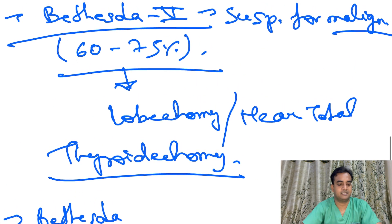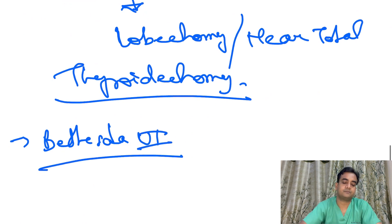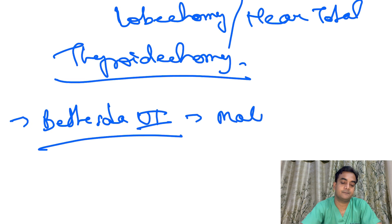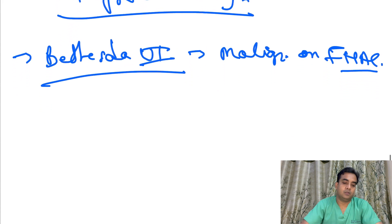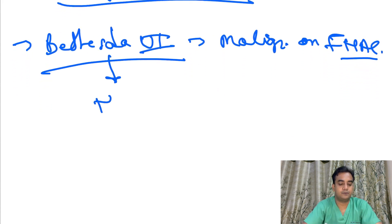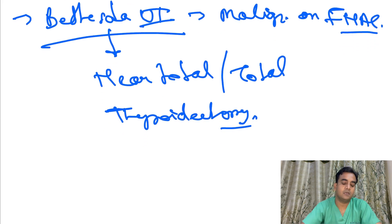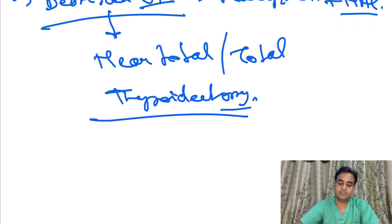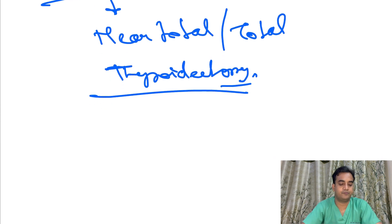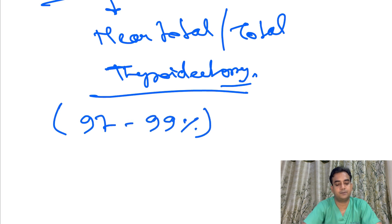Bethesda 6 is malignant on FNAC. Obviously, what you will do is near-total or total thyroidectomy. The chance of it being malignant after the final histopathological report is about 97 to 99 percent.